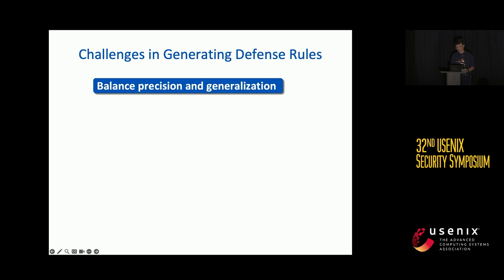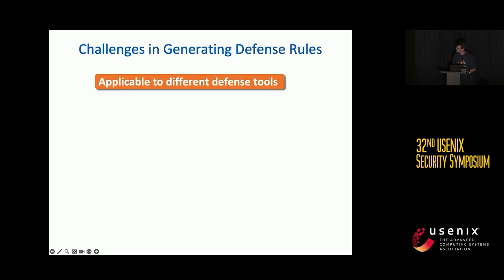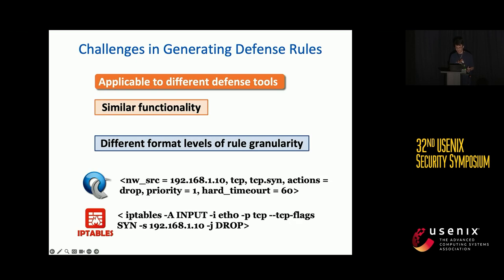After explanation, we identify two challenges in generating defense rules. The first is balancing precision and generalization — overly specific rules lead to overfitting and huge overhead, while overly generic rules may disrupt normal traffic and make the network unusable. Second, network defense tools have similar functionality but different formats. Designed defense rules should be applicable across different tools; for example, OpenFlow and IP table rules use different formats to block the same attack.